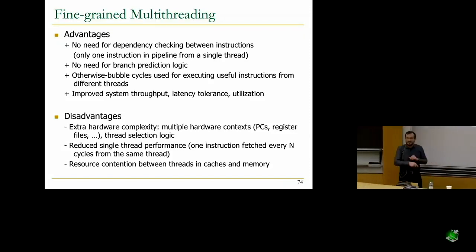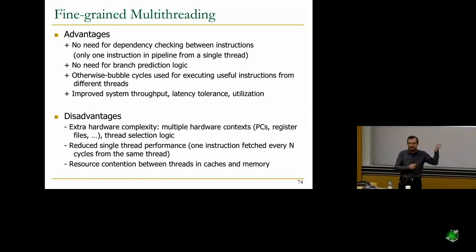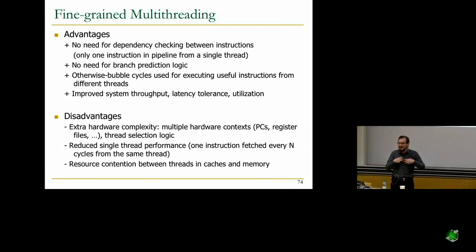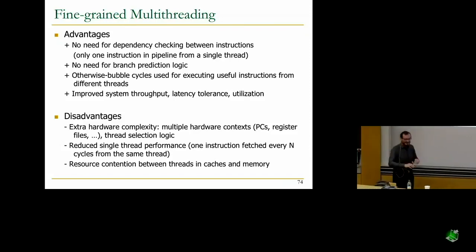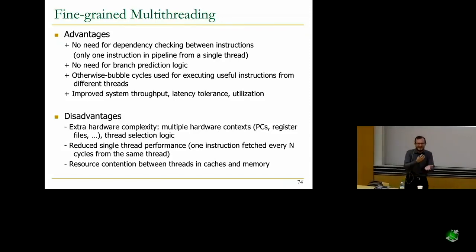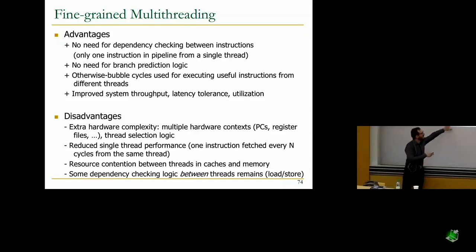There is resource contention between caches and memory from different threads that you need to handle. As a real-world analogy: at a restaurant, being one thread and encountering a group of 15 students just ahead is an example of resource contention — you get delayed behind that thread. The same can happen in the pipeline. Also, if your threads are not independent, you still need to do some dependency checking.